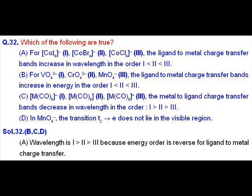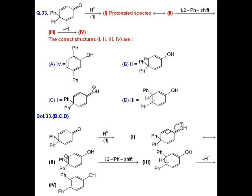So the options B, C and D are correct. Question number 33 is the dienone-phenol rearrangement reaction in which the dienone under acidic condition isomerizes to phenol and 1,2 phenyl shift also takes place.